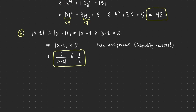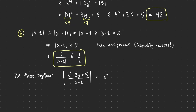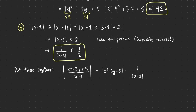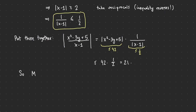Now combining the two parts: |x² − 3y + 5| / |x − 1| = |x² − 3y + 5| × (1/|x − 1|) ≤ 42 × (1/2) = 21. So m = 21 works as the upper bound.